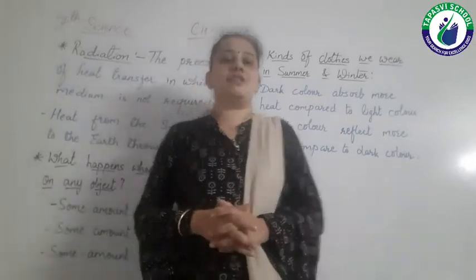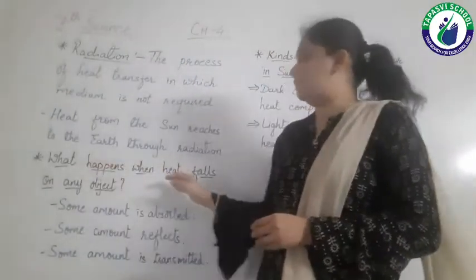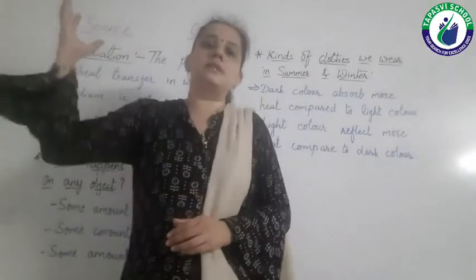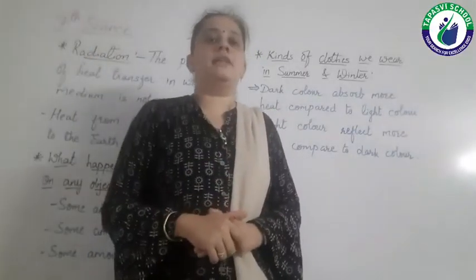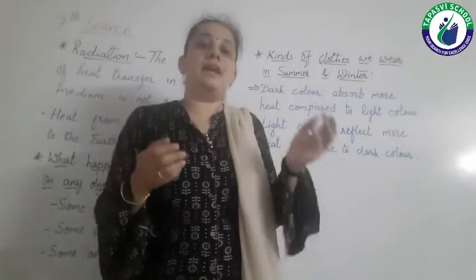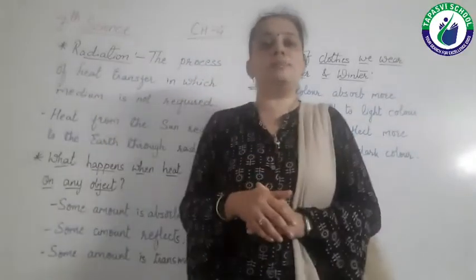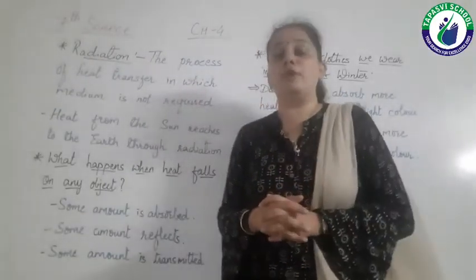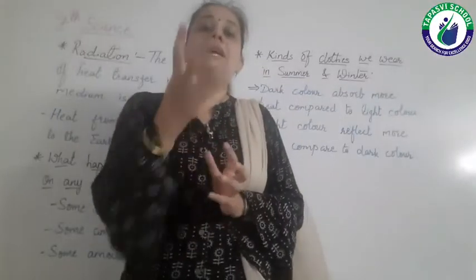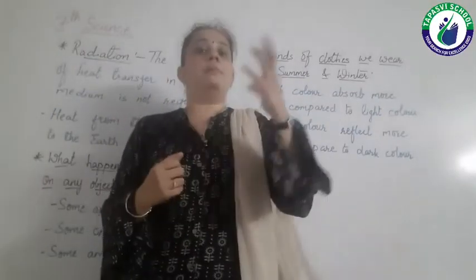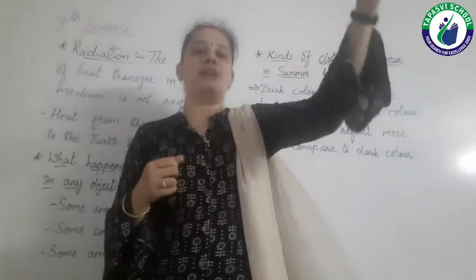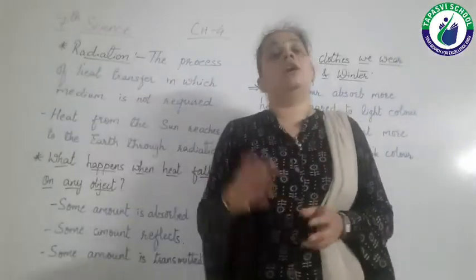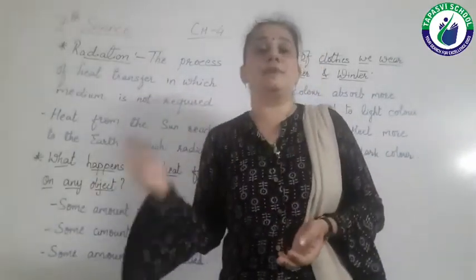Our next topic is: what happens when heat falls on any object? We know that heat from the sun falls on the earth — then what happens? When heat falls on any object, there are three possibilities: a part of the heat will be absorbed by that object, a part of the heat will be reflected back into the atmosphere, and a part of the heat may be transmitted.